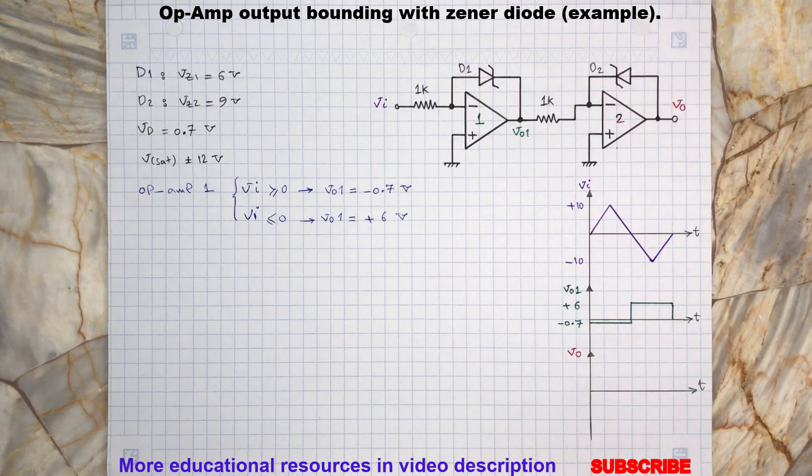This will lead the output of the op-amp to swing to its positive saturation point, which is 12 volts. Therefore, D2 will be forward biased and act as a normal diode. In this case, the output will be limited at positive 0.7 volts because the cathode of D2 is virtually grounded.